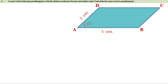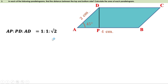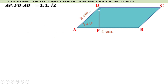Let us give a name for this parallelogram. Let us draw a perpendicular from D to the side AB, and let it meet AB at P. Now look at triangle APD. Angle A is 45 degrees, angle P is 90 degrees, therefore angle D is also equal to 45 degrees. That means it is a triangle with angles 45-45-90, and the ratio between the sides is 1:1:√2. That means AP:PD:AD = 1:1:√2.